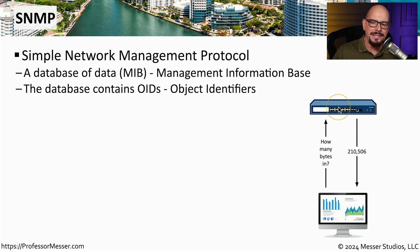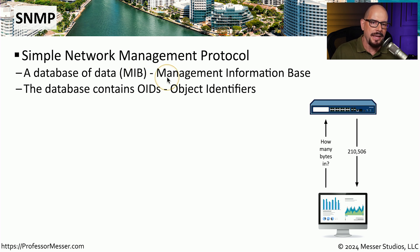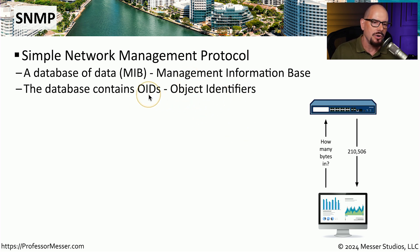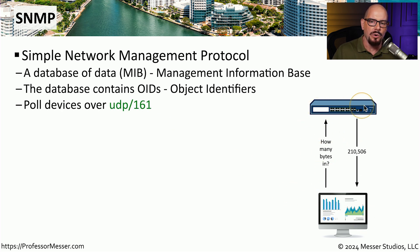The query being made to this device is querying a number of different parameters stored in what is known as a MIB — a Management Information Base, or central database of data stored on that remote device. SNMP queries specific values in that database by referring to an object identifier, sometimes called an OID. All of this polling occurs over UDP port 161 and allows us to access any device on our network and gather information about how those devices are performing.